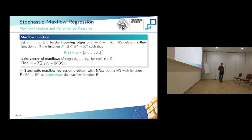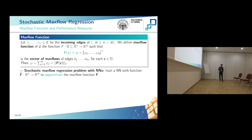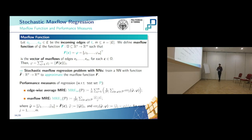Concerning the function we want to approximate, we consider the max flow function. Given E_1 through E_m as the incoming edges of the sink, we define the max flow function of the network as the function f that goes from omega in R^n to R^m, associating to each capacity vector a vector of fluxes corresponding to the edges. The max flow is given by the sum of the elements of this vector. To analyze neural network performance, we introduce the edgewise average mean relative error and the max flow mean relative error as performance measures.